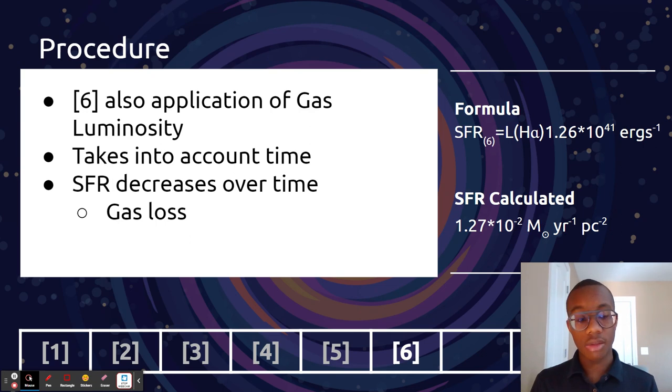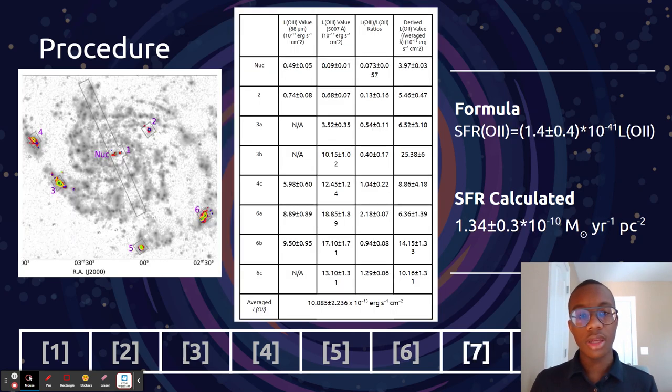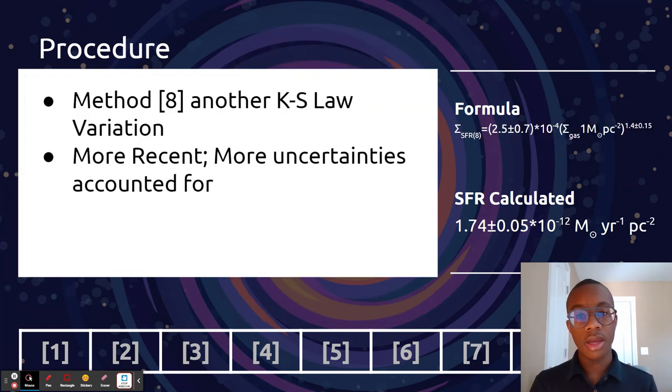Number six was an application of gas luminosity, so how bright stuff is. But this one was special in how it took into account time. Number seven measured oxygen concentrations within the galaxy and applied that to find the star formation rate. Method eight is another variation on the KS law. It's more recent. Some more uncertainties are taken into account, so the formula is much more complex here.